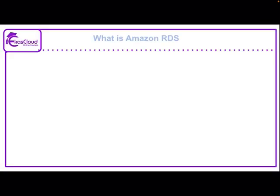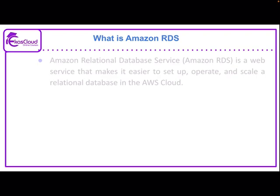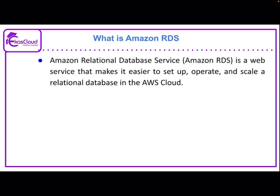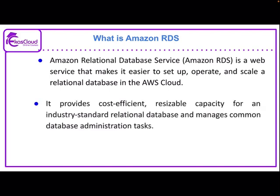Amazon RDS is nothing but a relational database service. It's a web service that makes it easier to set up, operate and scale a relational database in the AWS Cloud. It provides cost-effective, resizable capacity for an industry standard relational database and manages common database administrative tasks.